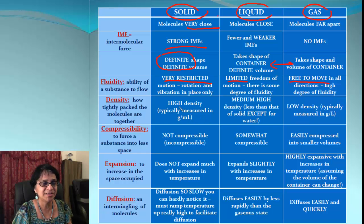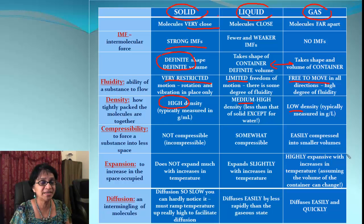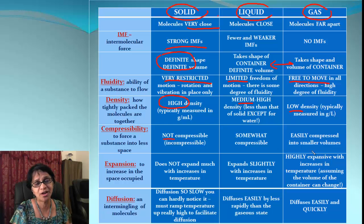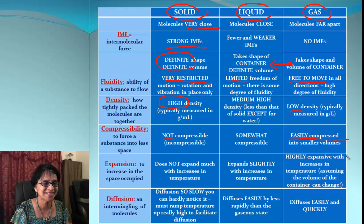Density is highest in solids, medium in liquids, and as we go towards gas it becomes low density. Compressibility — can we compress those using pressure? In the case of solids we cannot compress them much. Liquids we can somewhat compress, and gases we can definitely easily compress — we use compressed air in tires.